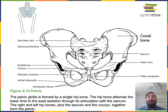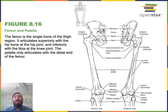The acetabulum is a socket — an indentation on the lateral aspect of the coxal bone that functions as the socket for the hip joint, where the head of the femur contacts the coxal bone. The femur is the largest long bone in the body. There are two femurs, one in the left thigh and one in the right thigh. The thigh is also known as the femoral region and gets its name from the femur.